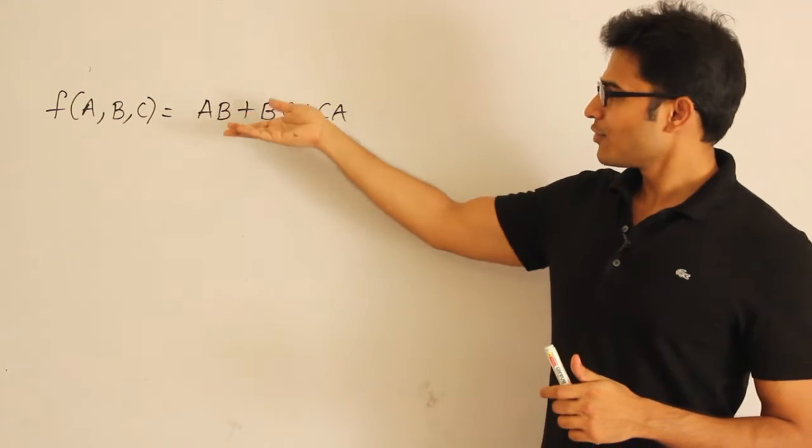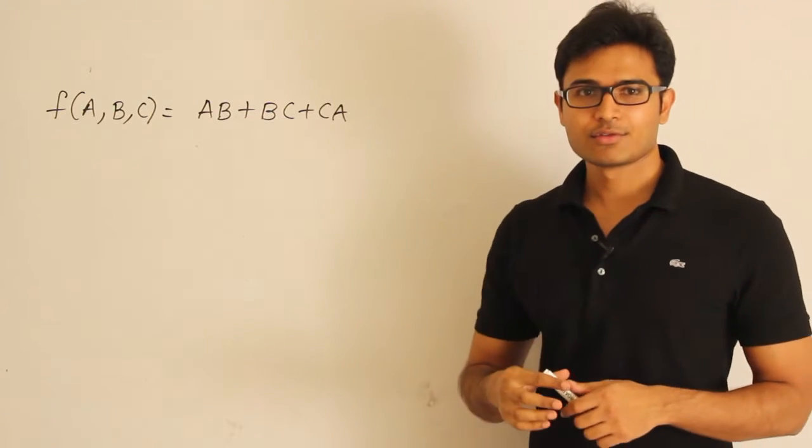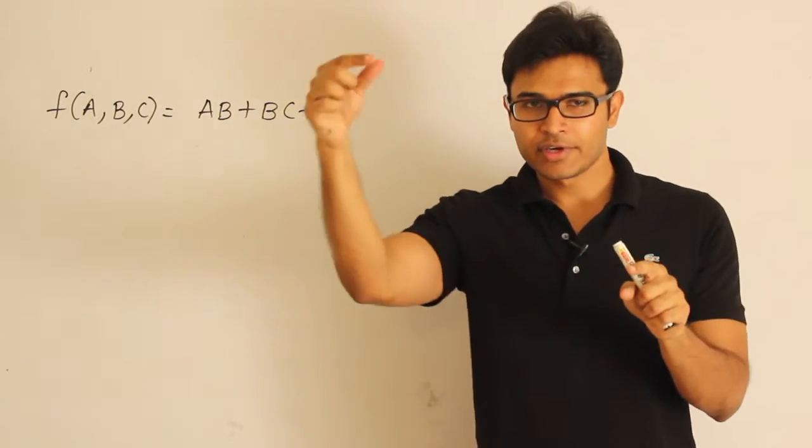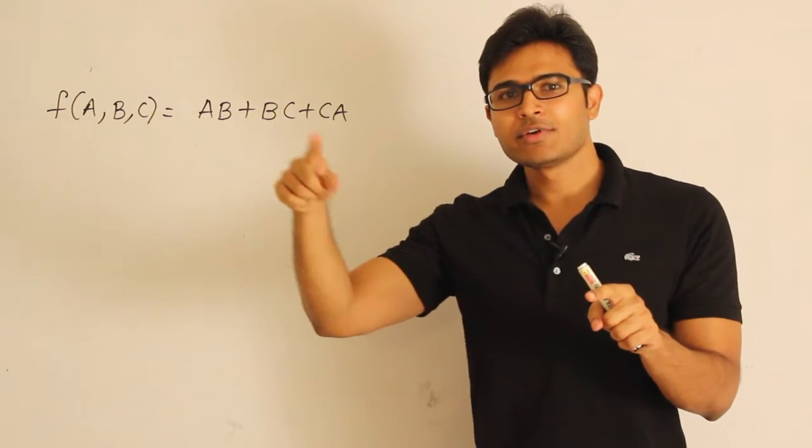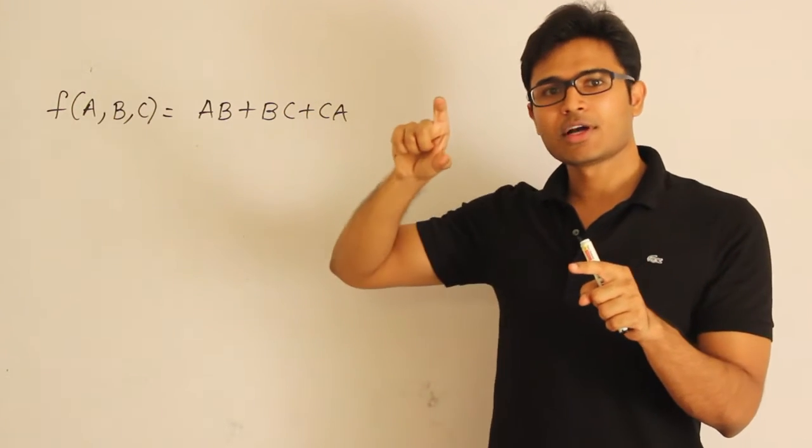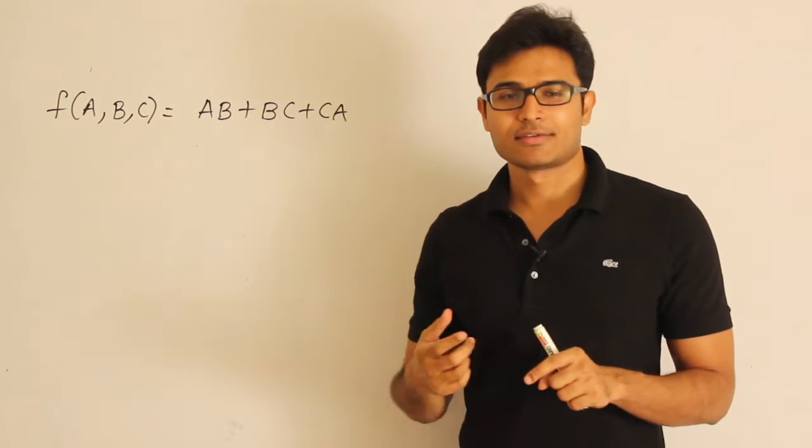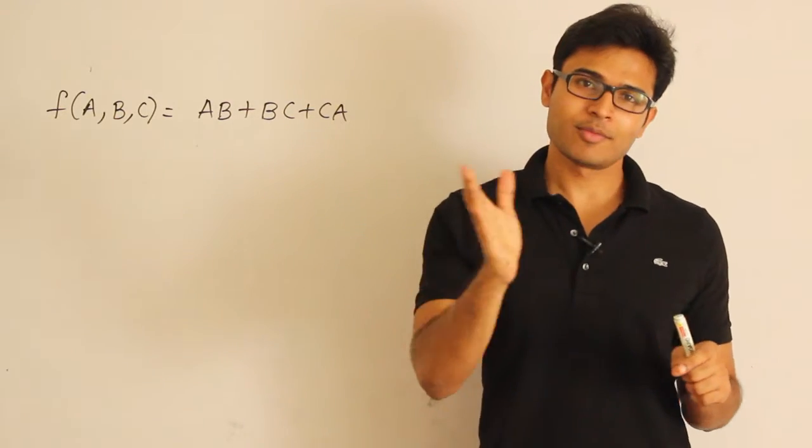The complement is not at all present in the expression. So how we are doing it is, if complement is present in the expression somewhere, we are just nullifying everything else so that complement will come out. But here the complement is not present anywhere, then how can we actually get a complement out of it?